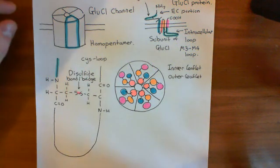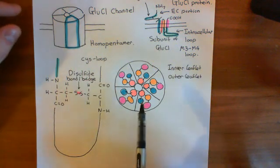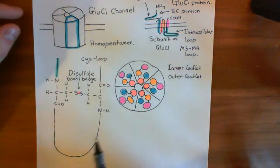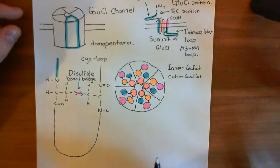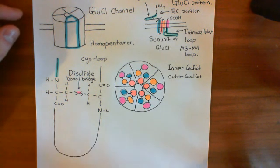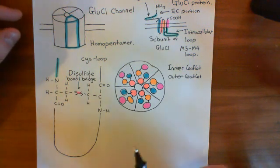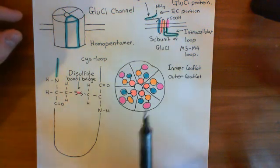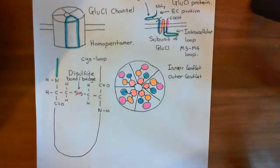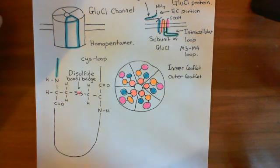This is a channel found in invertebrate worms, such as Caenorhabditis elegans — this is the GluCl channel.